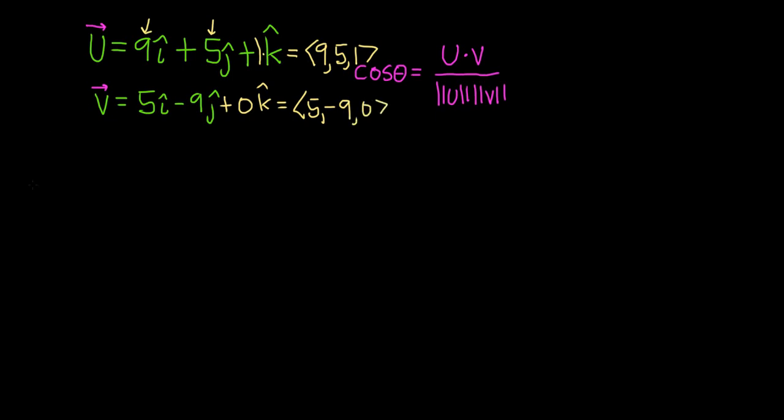Okay, let's take the dot product of these two vectors. So, u dot v, and this is equal to... So, to find the dot product, you multiply the corresponding components. So, we would do 9 times 5 plus, and then 5 times negative 9 plus, oh, this is convenient, and then 1 times 0.